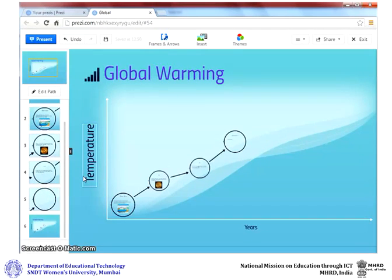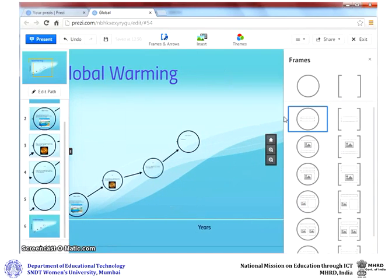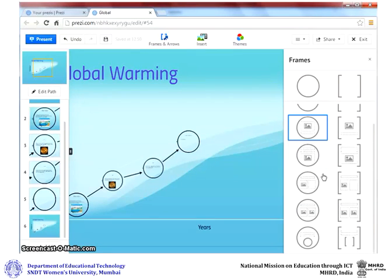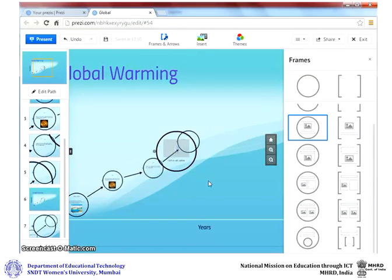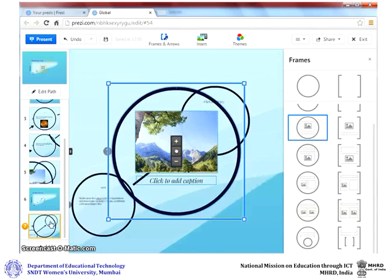If you want to add more frames to your Prezi, click on add. Then select the frame type that you want to insert. Double click on it so that it is added to your presentation.